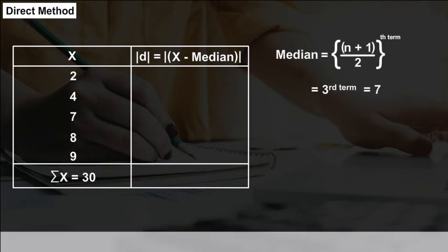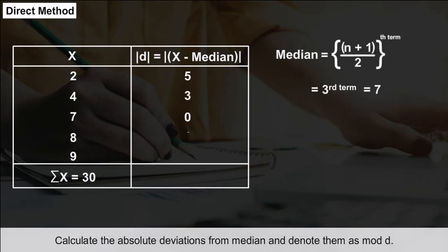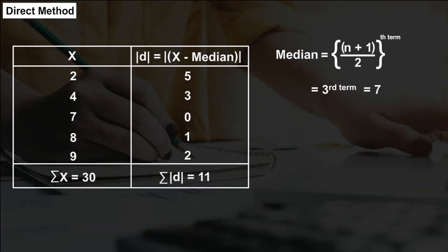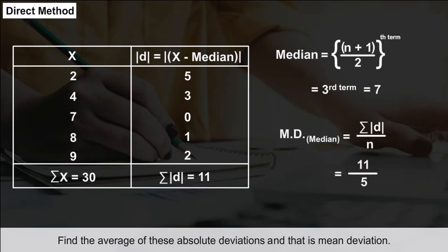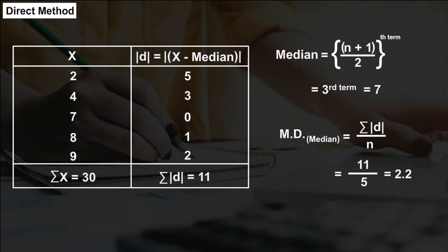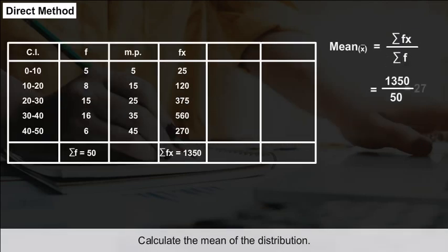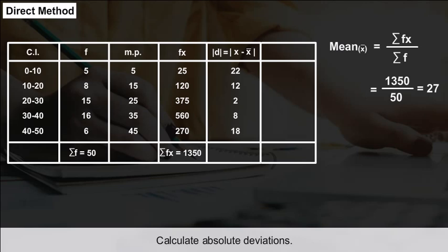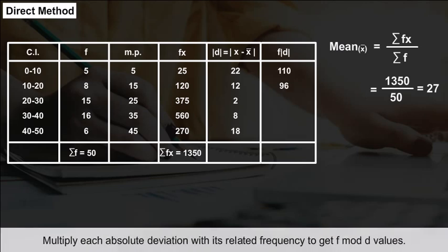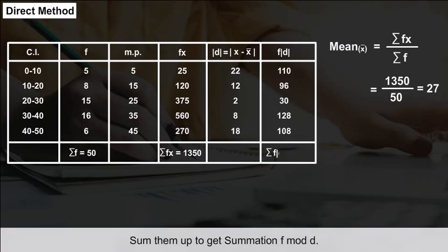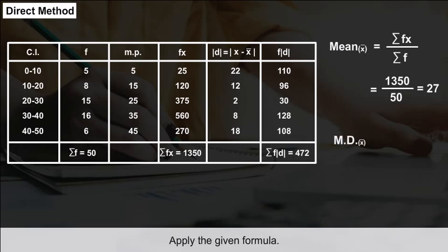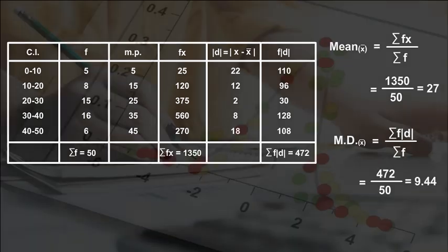Mean deviation from median for ungrouped data: Calculate the median, then calculate the absolute deviations from the median and denote them as |d|. Find the average of these absolute deviations — that is the mean deviation. For mean deviation from mean for a continuous distribution: calculate the mean, calculate absolute deviations, multiply each by its frequency to get f|d| values, sum them, and apply the formula: MD(x̄) = Σf|d| / Σf.